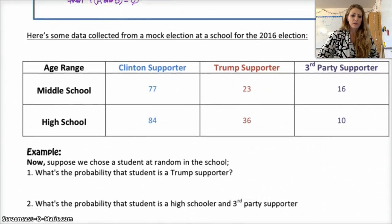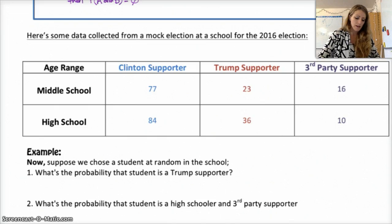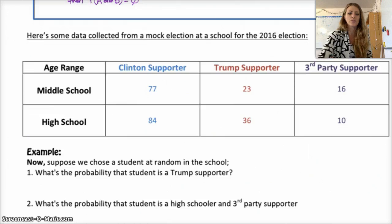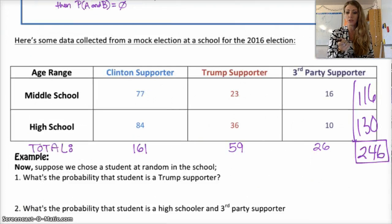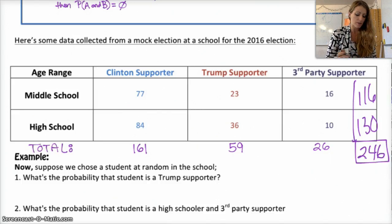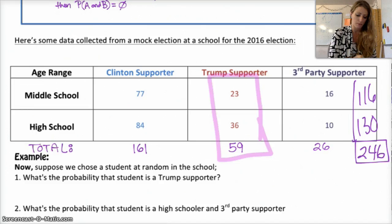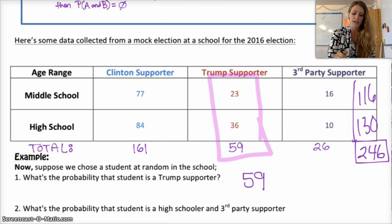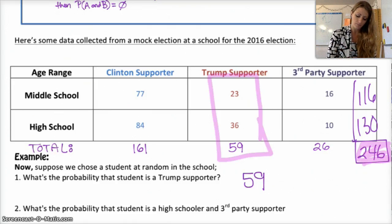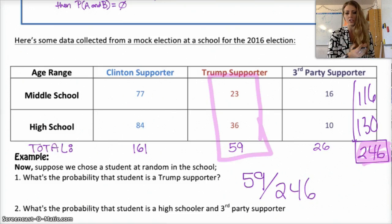Say we choose a student at random. We want to know: what's the probability that a student is a Trump supporter? First, find your totals for each column and row — that'll help in the long run. The probability of selecting a Trump supporter would be 59 out of the grand total of 246, because we're picking any student, not specifically a middle schooler or high schooler. So it's 59 out of 246, and you can change that to a percent if you want.